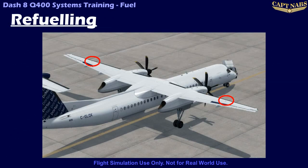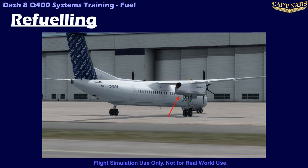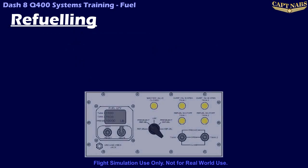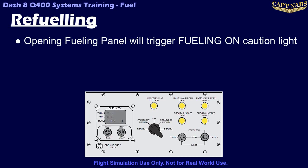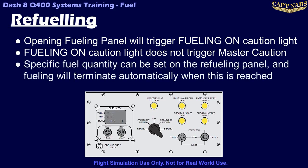Refueling can be accomplished through an overwing fuel cap on each wing. However, fueling is normally accomplished through a single-point pressure refueling panel located on the underside of the aft end of the right engine nacelle. Any time this refueling panel is open, a fueling on caution light will illuminate. This is the only caution light on the caution warning panel that does not trigger the single chime or the master caution light. This panel has a number of lights and switches to allow control and monitoring of the refueling process, and the total quantity requested can be entered on this panel, with refueling automatically terminating when the requested level is reached.